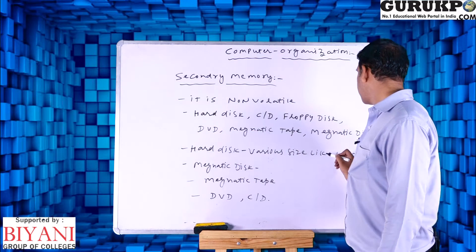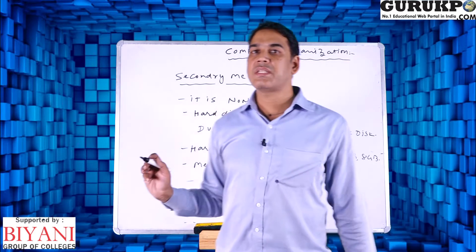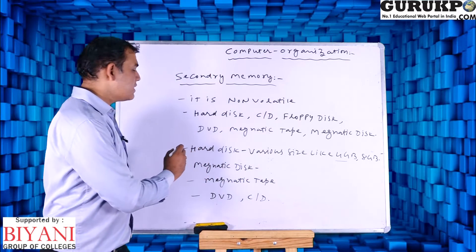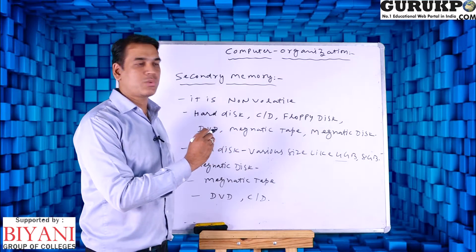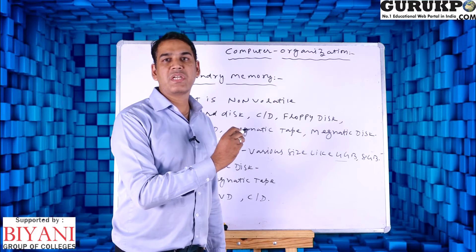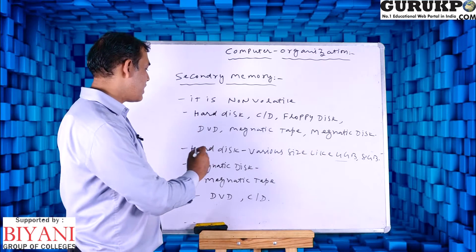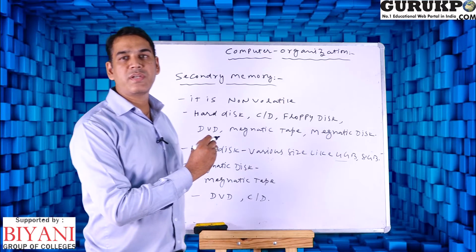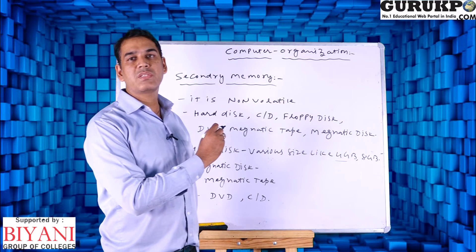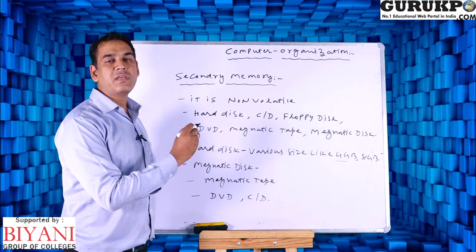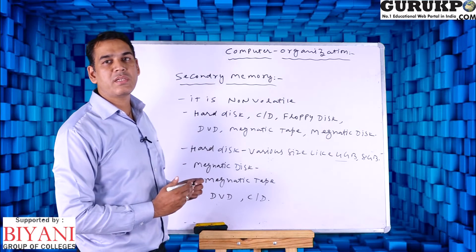Hard disk comes in various sizes like 4 GB, 8 GB, and 16 GB as standard sizes. Magnetic disk uses concentric circles and can store a lot of data. Magnetic tape stores sequential data and is used when sequential data storage is needed. CD has a capacity of 700 MB and DVD has 4 GB; data is stored in concentric circles. DVD stands for digital versatile disk and CD stands for compact disk.